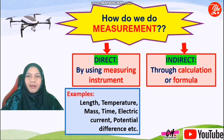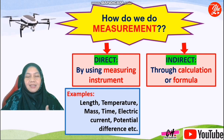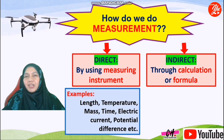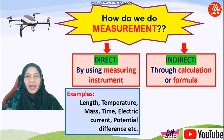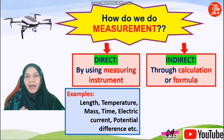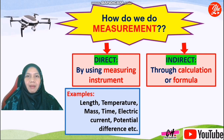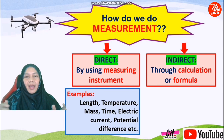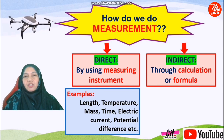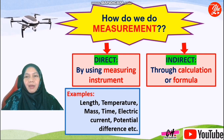Examples of direct measurement include: length, temperature, mass, time, electric current, and potential difference — all measurable using an instrument. We measure length using a meter rule; temperature with a thermometer; mass with a triple beam balance; time with a stopwatch; electric current with an ammeter; and potential difference with a voltmeter.